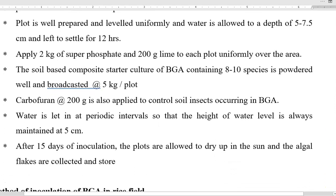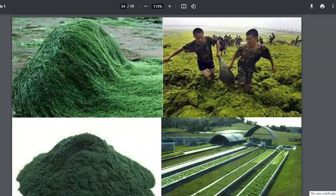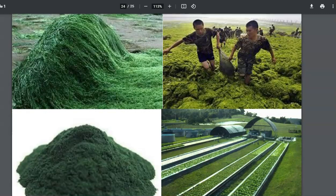Carbofuran is applied to prevent insects occurring in the stagnant water. Water is let in at periodic intervals so that the water level is always maintained at 5 cm. After 5 days from initial inoculation, the plots are allowed to dry up in the sun. The algal flakes are collected as seen in the previous method, dried, powdered, and stored for future use. This image shows BGA getting multiplied naturally in a paddy field, and certain images show collection of algal flakes taking place in Southeast Asian countries, as well as the powdering process.